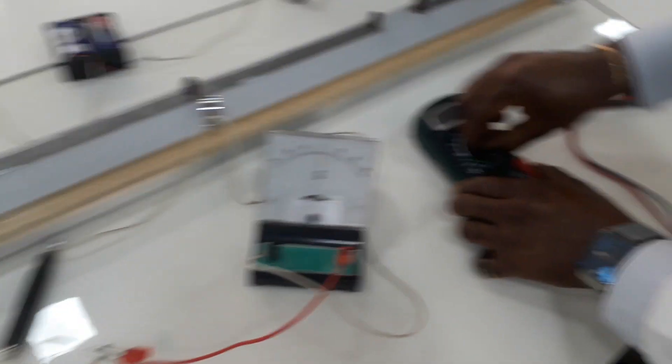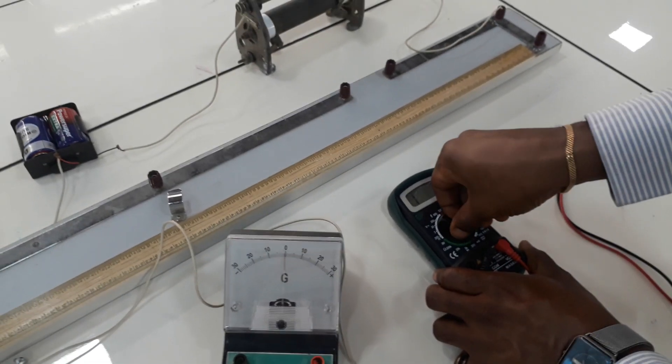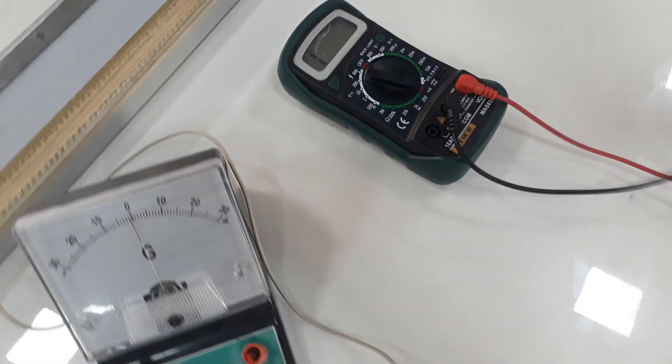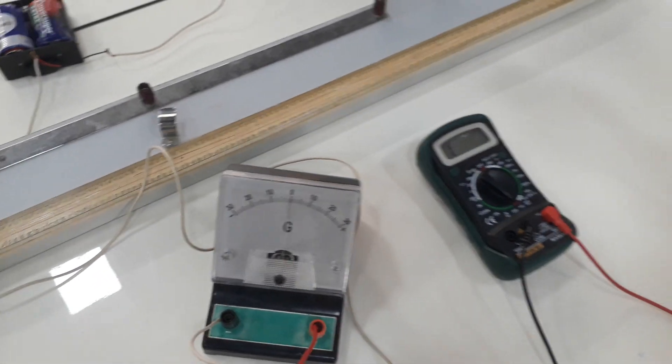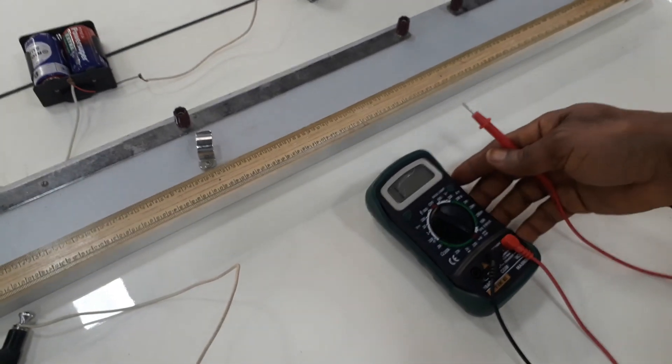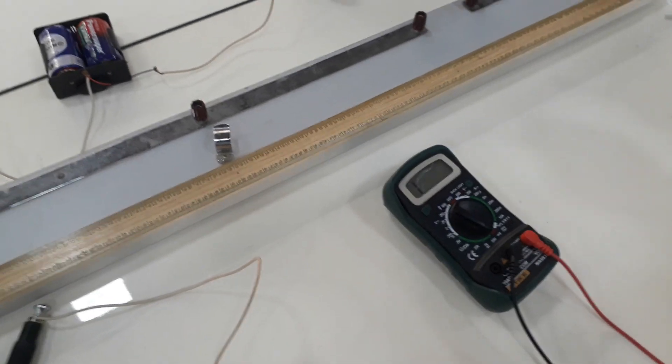It's very important that we check our continuity during our connections, because if we don't check continuity, we might have open circuit. And once there's an open circuit, by the time we check on our galvanometer, we will not be getting the right deflection.